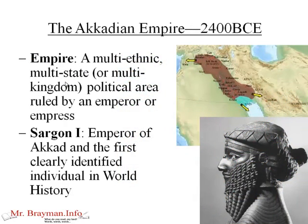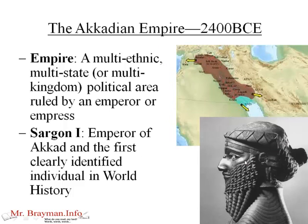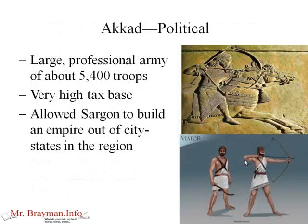The next empire to take over the area was the Akkadian Empire — and they were a true empire. The definition of empire is a multi-ethnic, multi-state or multi-kingdom political area ruled by an emperor or empress. So you've got all these little city-states all over the place, and Akkad was able to bind them together into this empire, following the rivers and the Fertile Crescent. United under the leadership of Sargon I — and he was the first clearly identified individual in world history, which is pretty wild.